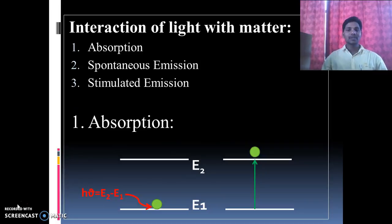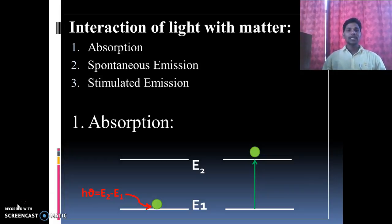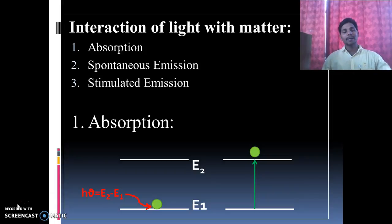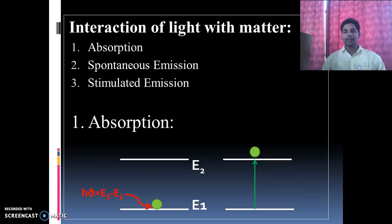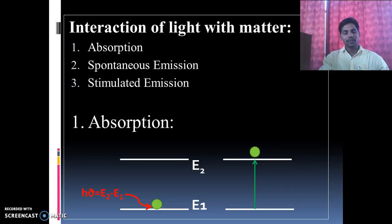Now we look at the interaction of light with matter. Light interacts with matter in three different cases: absorption, spontaneous emission, and stimulated emission. In absorption, all atoms reside in a ground state level. Considering two energy levels E1 and E2, where E1 is the ground state and E2 is the excited state, when a photon of energy hν equal to E2 minus E1 is incident on the ground state atom, the atom absorbs that energy and goes to the excited state. This is called absorption.